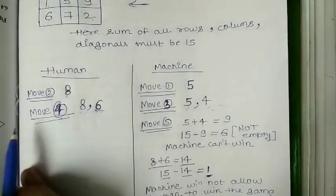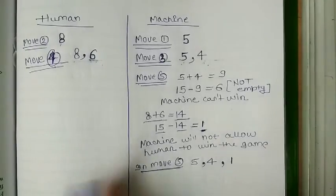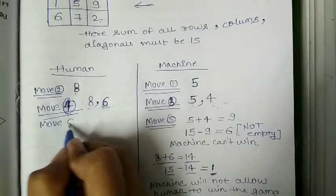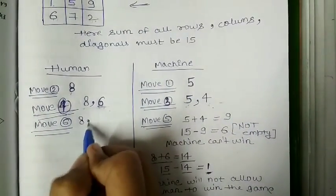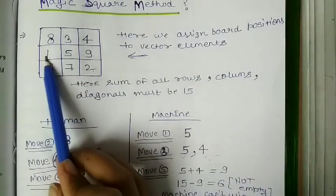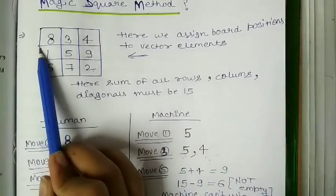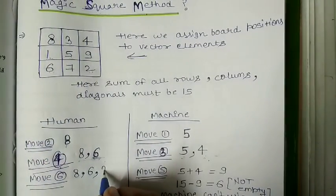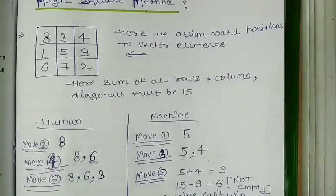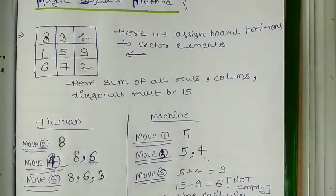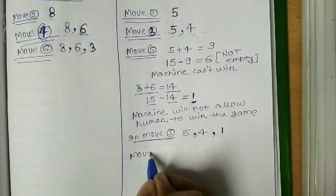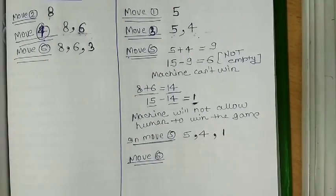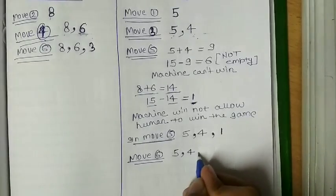Move 5 is completed. Now in Move 6, human has already taken elements 8 and 6, and machine has blocked with element 1, so human can't win. Suppose human takes element 3 in Move 6. The move taken by human is completed.